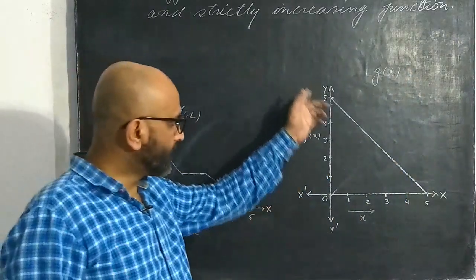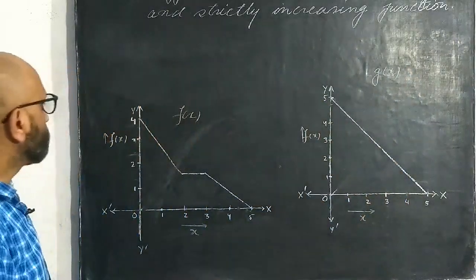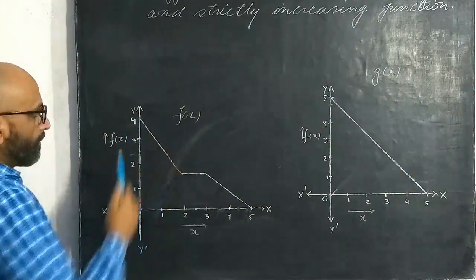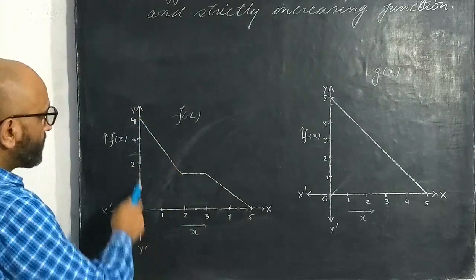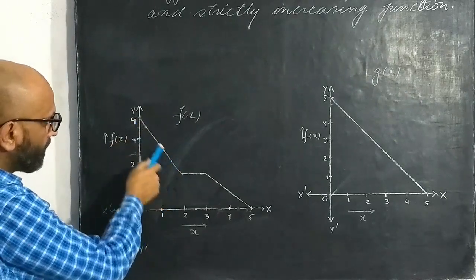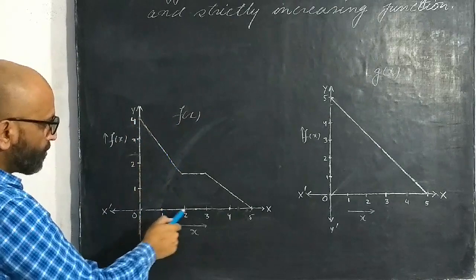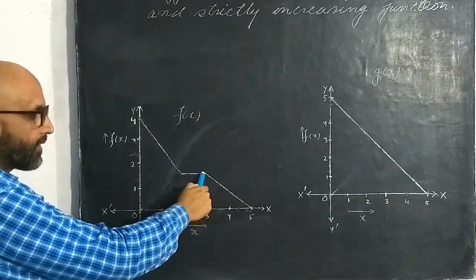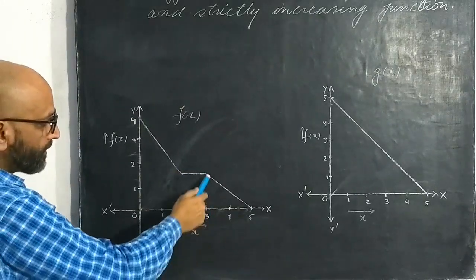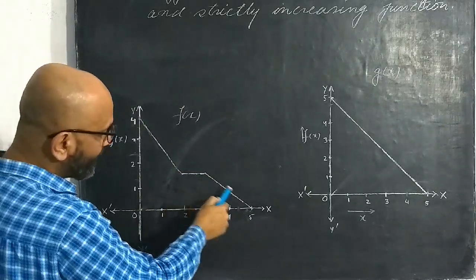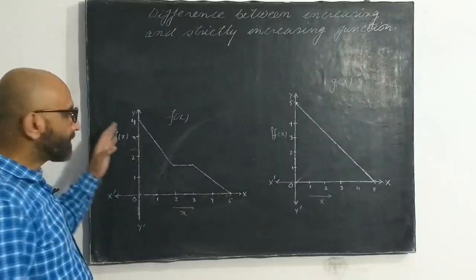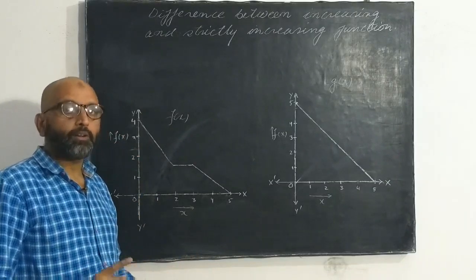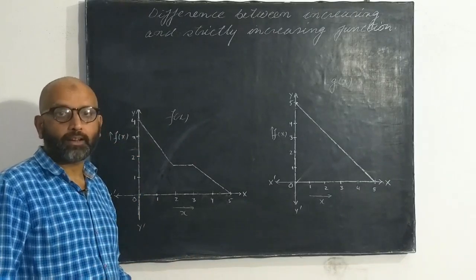Similarly, as we observed in the case of increasing and strictly increasing: f(x) is continuously decreasing from 0 to 2, from 2 to 3 it is constant — neither increasing nor decreasing — and from 3 to 5 it is again decreasing. So in this case, this function is said to be a decreasing function but not a strictly decreasing function.